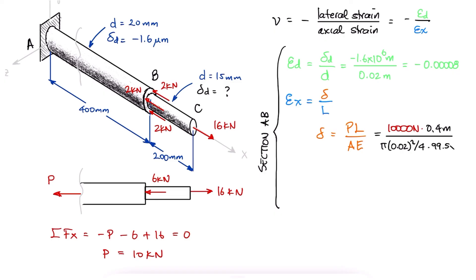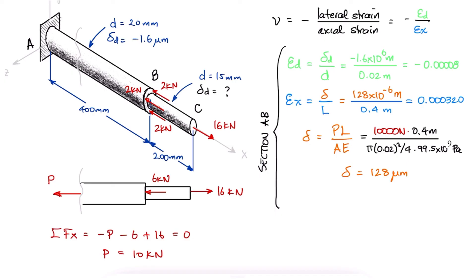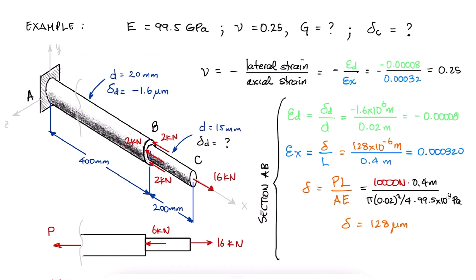Substituting the values, we find that delta is 128 microns, and with that value we can calculate the axial strain. With both the lateral and the axial strains, we find a Poisson's ratio of 0.25.